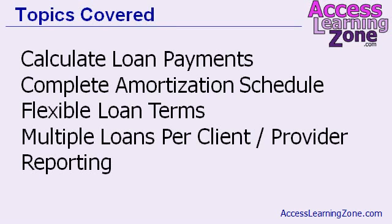So this new and improved loan amortization database lets you calculate loan payments, generate a complete amortization schedule, and has flexible loan terms — this is an upgrade from the last database. You can specify monthly, weekly, bi-weekly, or quarterly for your loan payments. The new database also lets you specify multiple loans per client. There's a client table and a provider table, so you can track loans per provider, bank, lending agency, or whatever. And I added a bunch of new reports.